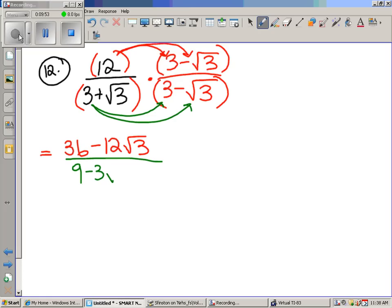We're going to distribute. 3 times 3 is 9. 3 times negative radical 3 is negative 3 radical 3. These two multiplied together are plus 3 radical 3. And finally we have negative square root of 9. We're just going to reduce really fast. These two cancel out.